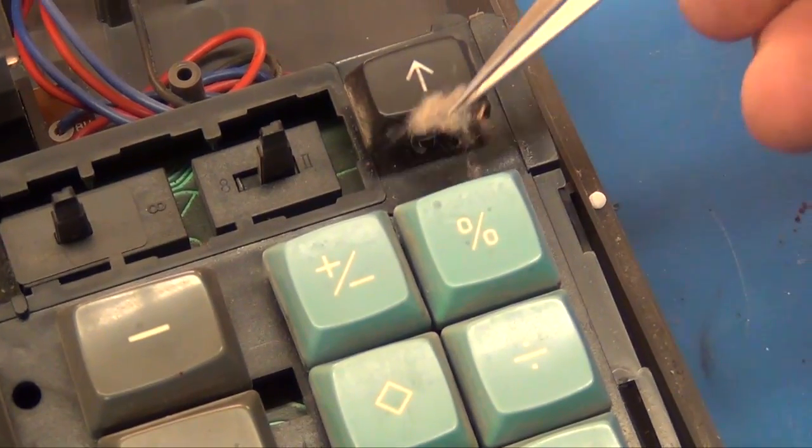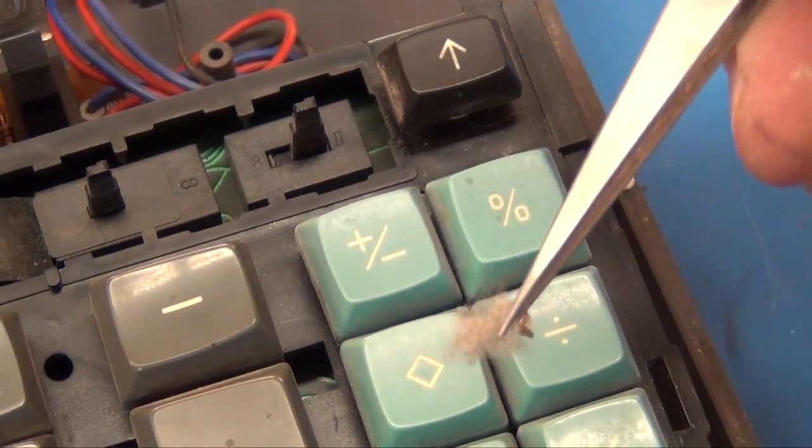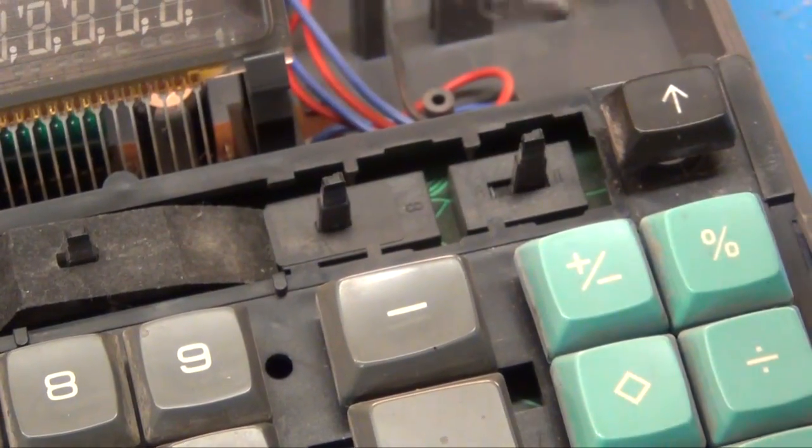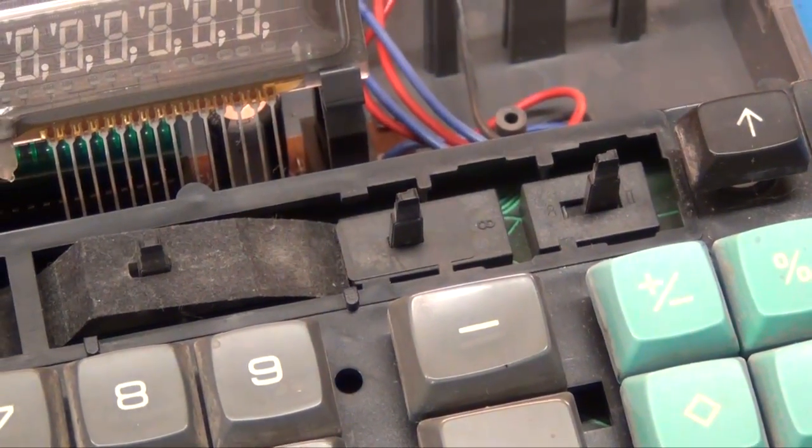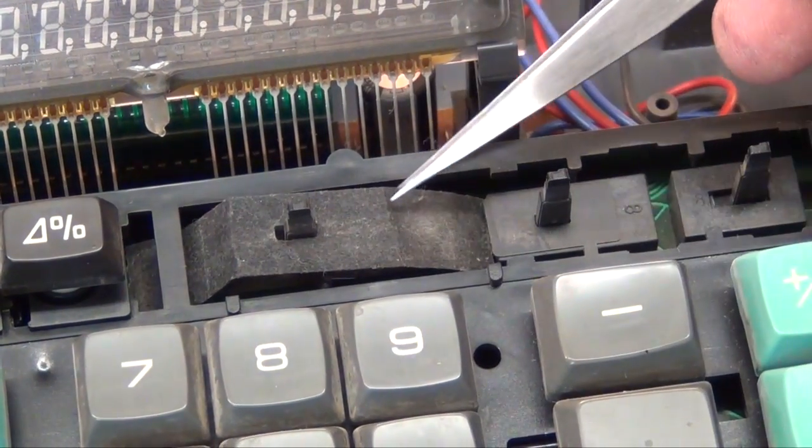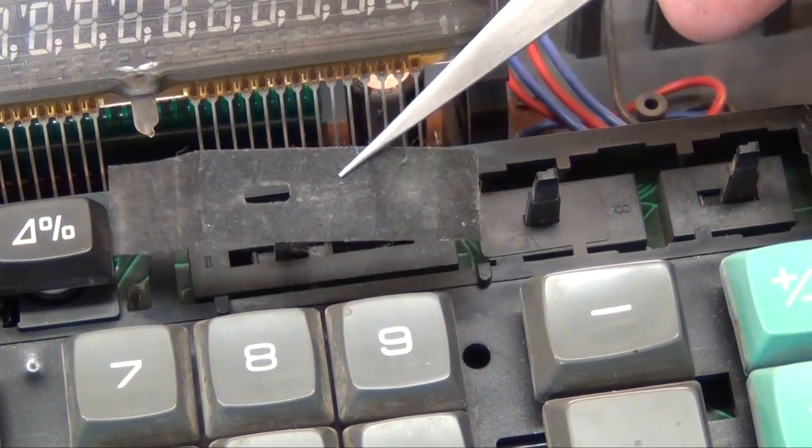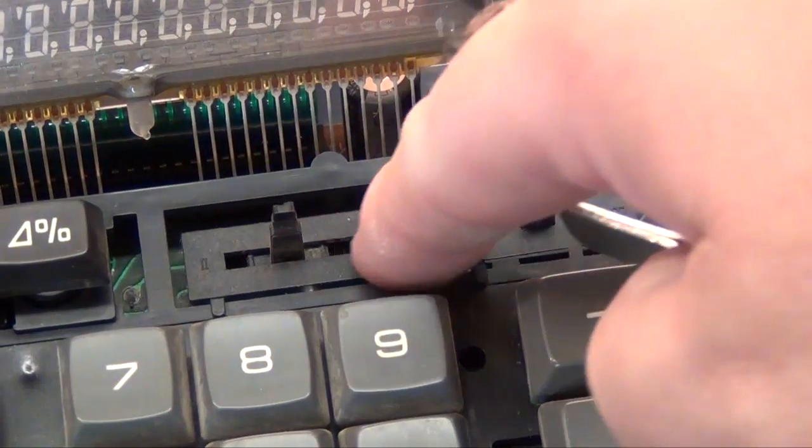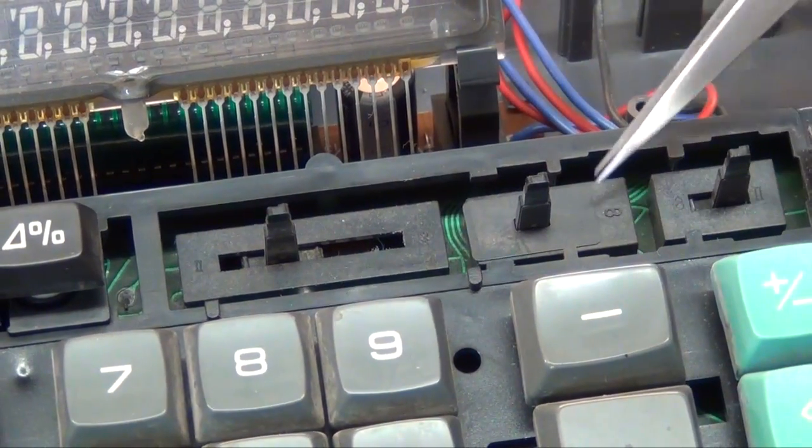So there's lots of this under the keys. I can blow a lot of it out but some of it I have to pull out. I don't know how it's gotten in there. There's these little protective covers that keep dust and dirt from getting inside these sliders.